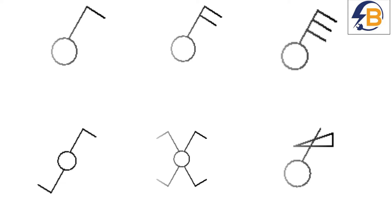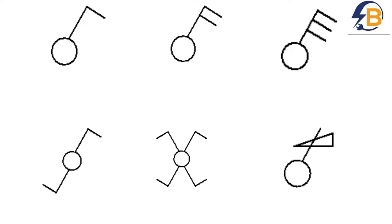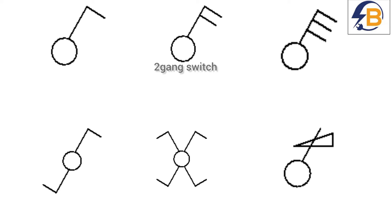The next set of symbols are used to represent different types of light switches. In electrical wiring, there are a lot of different types of switches, but here I'll be talking about the basic ones we normally use in wiring. If you are wiring a simple lighting circuit in which you use one switch to control one lamp, you will need a one-gang one-way switch — this symbol represents that type of switch. And then this is a two-gang one-way switch.